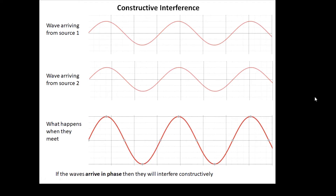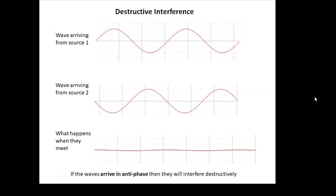They are in phase — going up and down together at the same time — and the result is we get a big wave. So the observer would hear a loud sound. If the waves arrive in phase, then they interfere constructively.